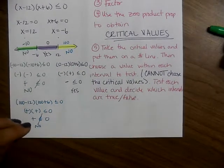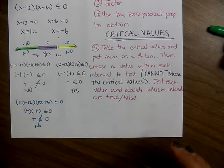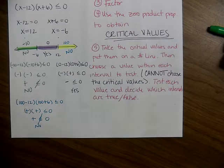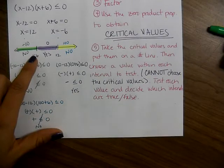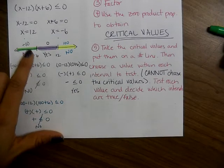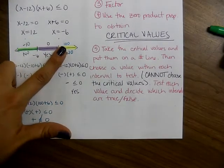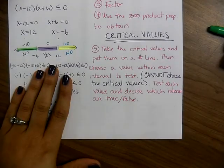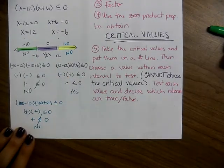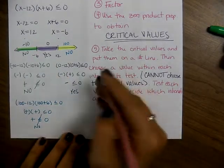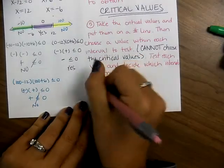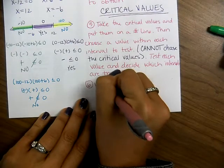You do not have to show all of this work. I want to see the number line, the number you chose, and whether it works or not — I don't need to see all the arithmetic. You can do the sign check in your head — they're quick tests. Step 6: once you've tested everything and decided which ones work, write your answer in interval notation.